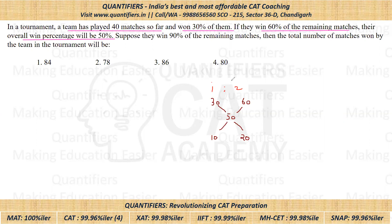So the ratio is 1:2. We know this value — one part is given to us as 40, because they have played 40 matches till now. That means the remaining matches will be equal to 80.